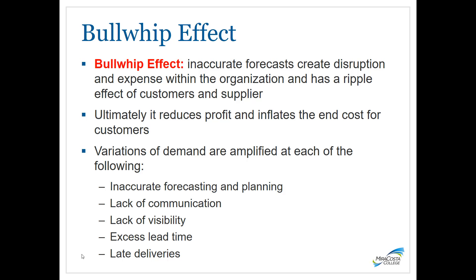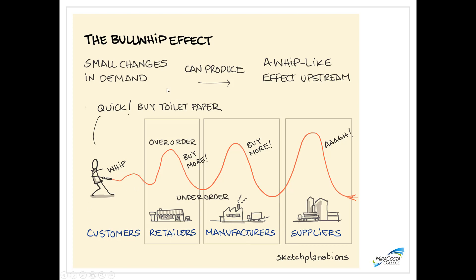The bullwhip effect reduces profit and inflates end costs for customers. Variations in demand are amplified by inaccurate forecasting, poor communication, poor visibility into information, long lead times, or late deliveries. Small changes in customer demand can produce a whip-like effect impacting retailers, manufacturers, and suppliers. For example, when the pandemic started, customers suddenly wanted to buy toilet paper, causing empty retailer shelves, which in turn signaled manufacturers and suppliers of a sudden shift in demand.